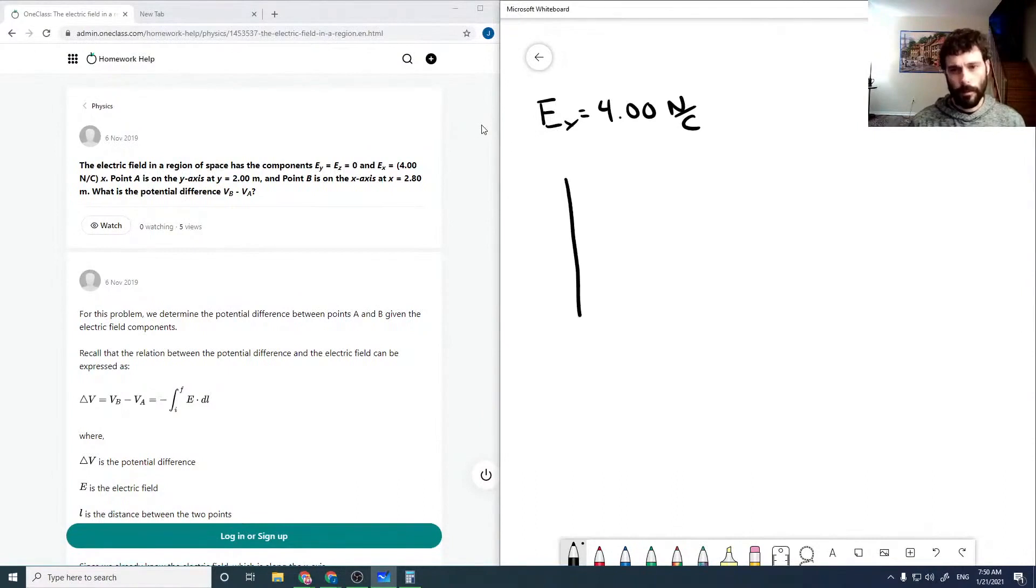We've got two points here. Point A is on the Y axis at Y equals two meters. Point B is on the X axis at X equals 2.80 meters.